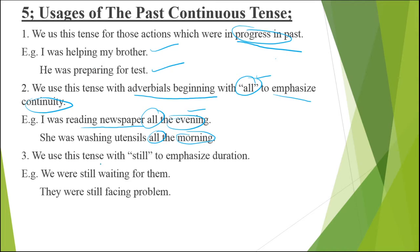Next, we use this tense with 'still' to emphasize the duration. Duration means you are going to tell how long the action lasted, and you will use 'still.' For example: 'We were still waiting for them' — telling the duration that the action was continuous in the past. And: 'They were still facing the problem,' which emphasizes the duration.